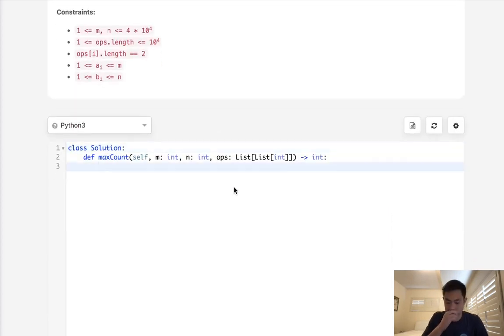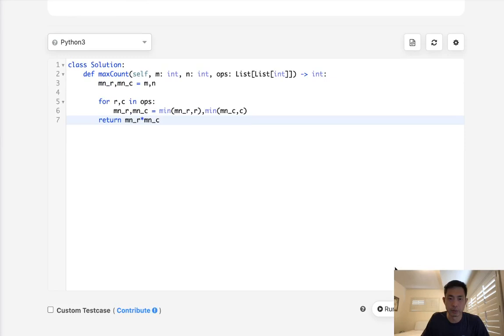So let's figure this out. What we'll do is initialize min row and min column, and these start with M and N. Next, we'll just move through all of our rows and columns and operations, and we're going to calculate what the minimum is here. So min R and min C is just equal to the min of min R and R, and this would be the min min C and C. Finally, we can just return the area calculated here. And this would be it.